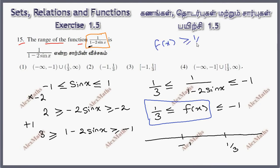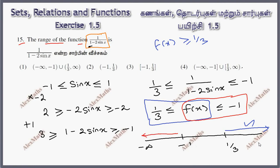So what is the total range? The total range is: values greater than or equal to 1 over 3, and values less than or equal to minus 1. On the number line, this means from minus infinity up to and including minus 1, union with 1 over 3 included up to positive infinity.